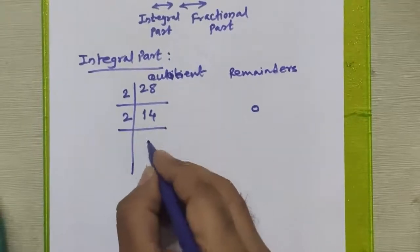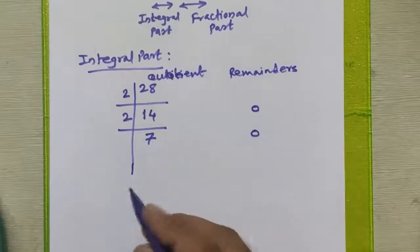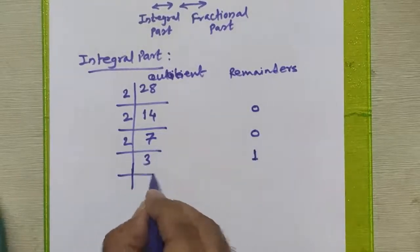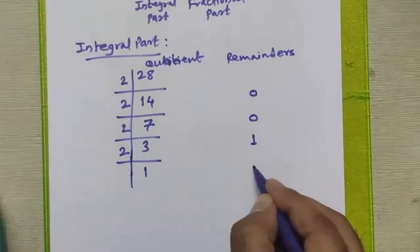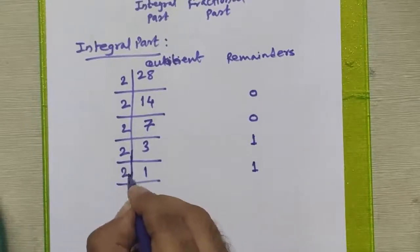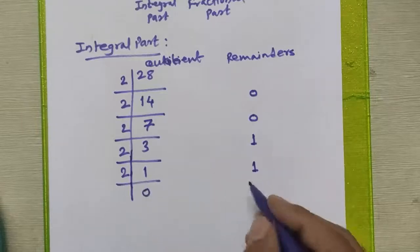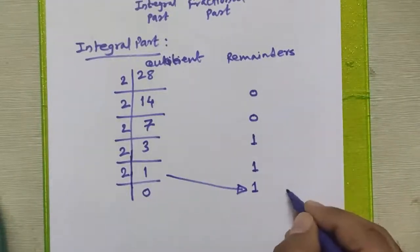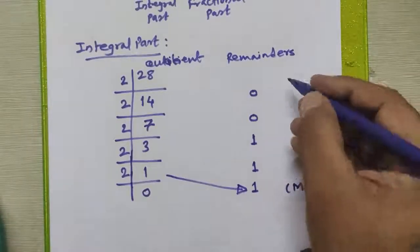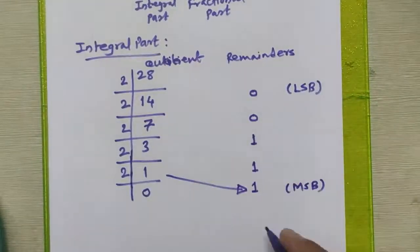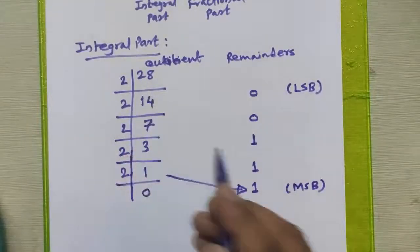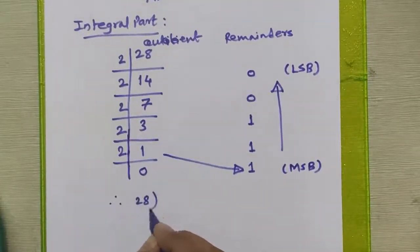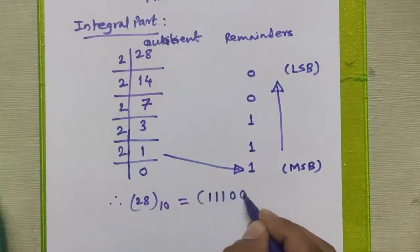Again we divide 14 by 2: the quotient becomes 7 and the remainder is 0. We divide 7 by 2: the quotient becomes 3 and the remainder is 1. We divide 3 by 2: the quotient becomes 1 and the remainder is also 1. In the last step we divide 1 by 2: the quotient becomes 0 and the remainder is 1 as it is. We stop when the quotient is 0. The last remainder is the MSB (most significant bit) and the first remainder is the LSB. Arranging remainders from bottom to top, 28 decimal is equivalent to 11100 in binary.